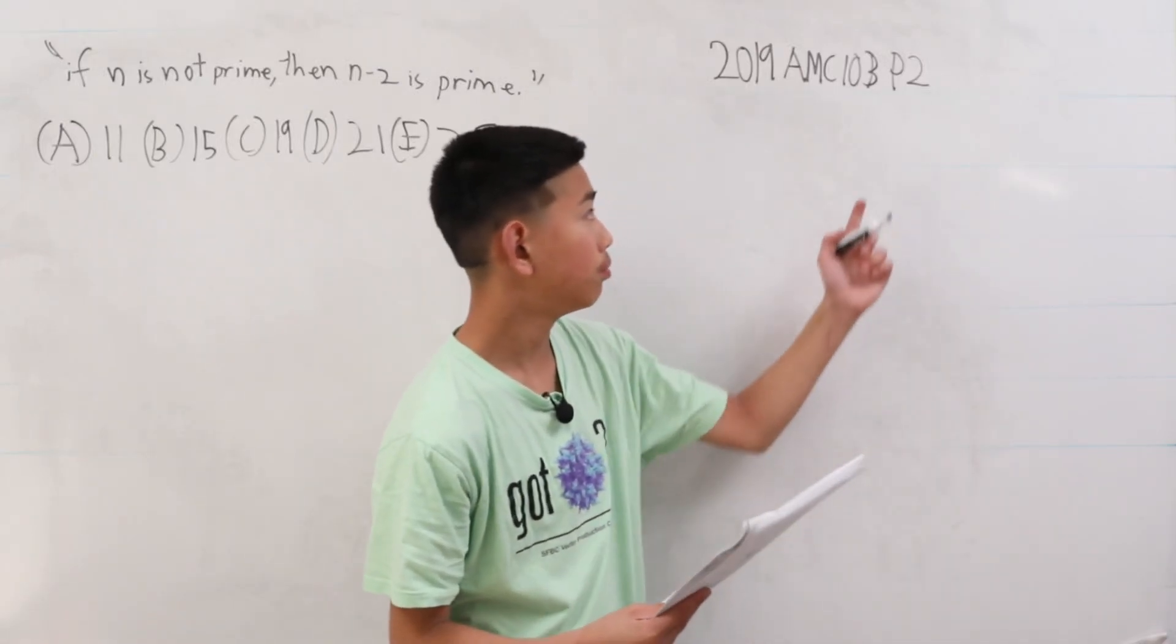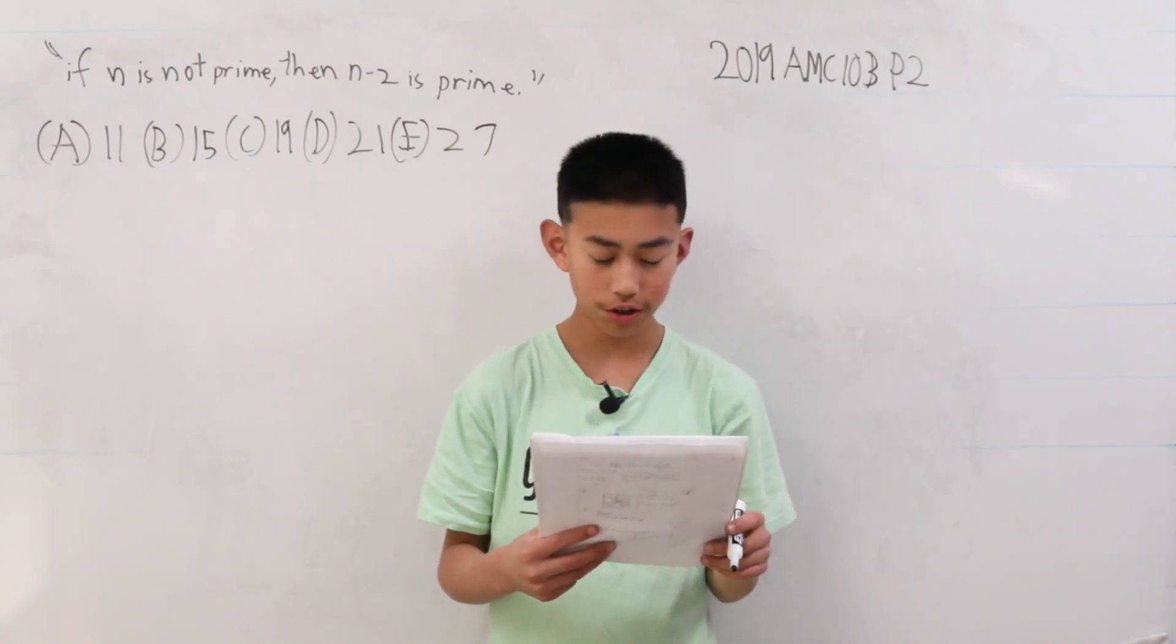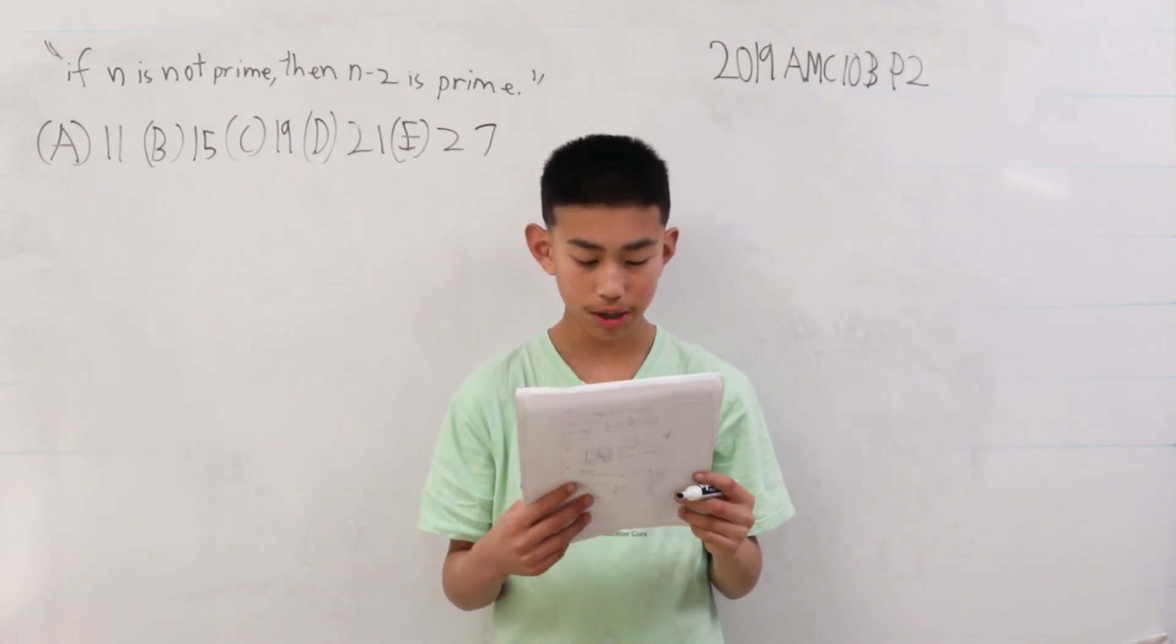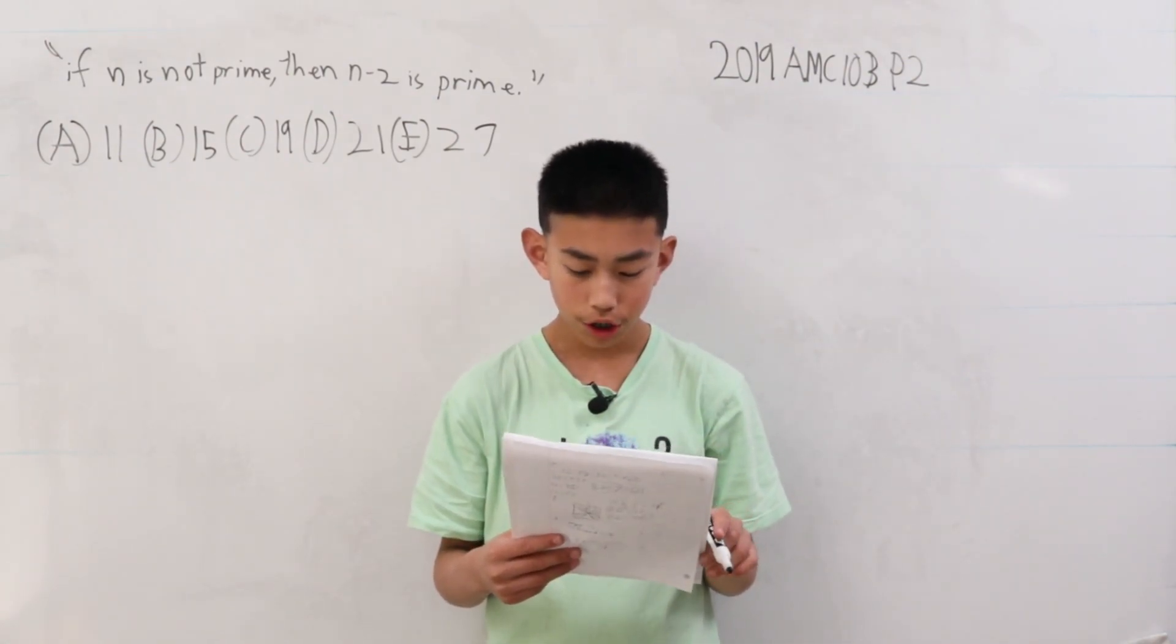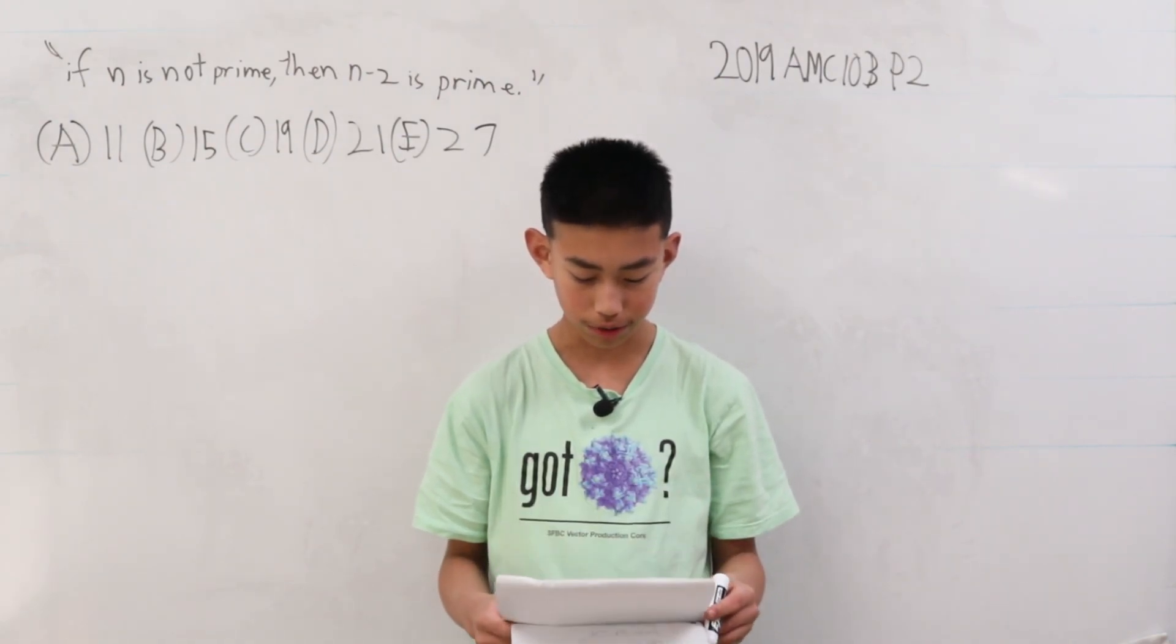We're now solving problem 2 from the MC10B from 2019. Consider the statement: if n is not prime, then n minus 2 is prime. Which of the following values of n is a counter example to the statement?